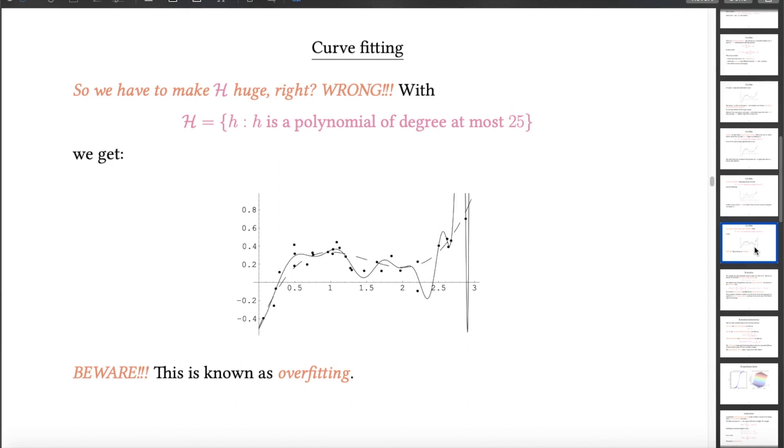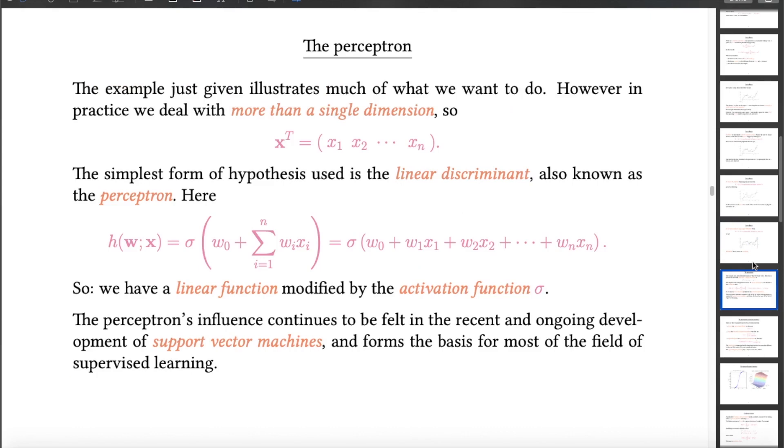Now, in particular, in this example, we have areas, for example, here, and here, and here, where generalization is not going to be good, because the prediction made by the solid line is a good way away from the correct value, which is the prediction made by the dashed line. Now that, if you like, gives you a good chunk of the big picture of what we're trying to achieve.